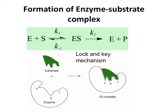the lock and key mechanism was proposed. This is that the shape of the substrate is similar to the shape of the active site to get in close contact.